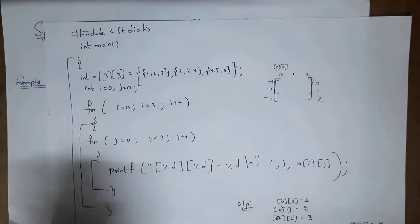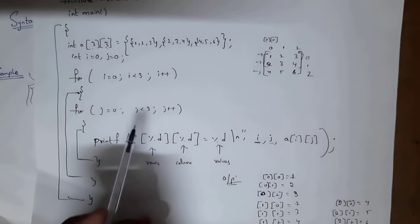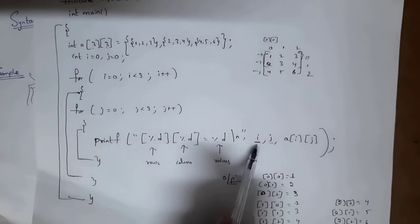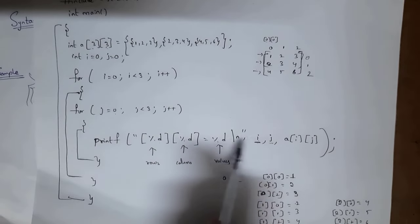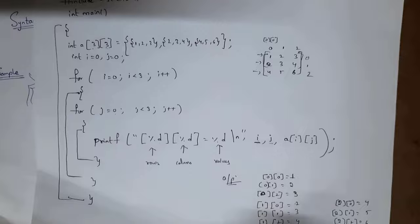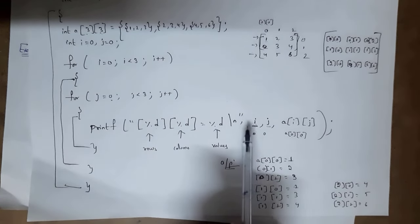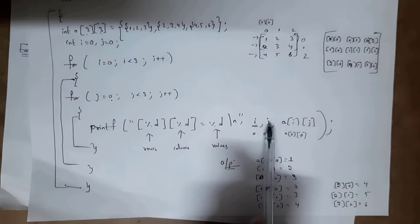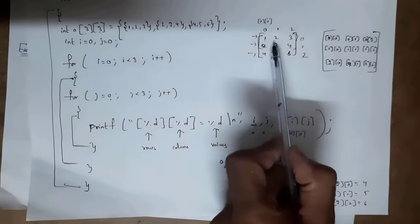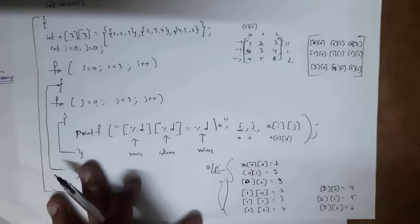I wrote: for(i = 0; i < 3; i++) which creates 3 row iterations (0, 1, 2), and inside: for(j = 0; j < 3; j++) for 3 column iterations. Inside the inner loop: printf("%d %d = %d", i, j, a[i][j]), where the first %d is the row index, the second %d is the column index, and the third %d is the value. So with i=0 and j=0, a[0][0] gives the value at first row, first column, which is 1. Similarly a[0][1] gives 2. This loop prints all 9 values in the matrix.